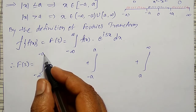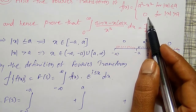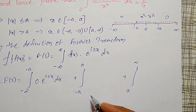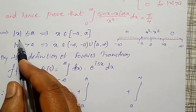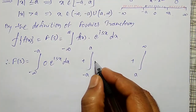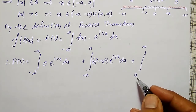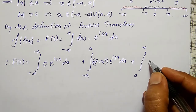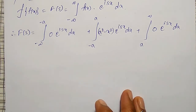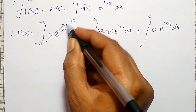From minus infinity to minus a, modulus of x is greater than a, so the function is defined to be 0. So that term is 0 times e^(isx) dx. From minus a to plus a, modulus of x is less than or equal to a, so the function is a² minus x², giving (a² minus x²) e^(isx) dx. From a to infinity, the function is again 0. To evaluate the middle integration, I will use Bernoulli's rule.